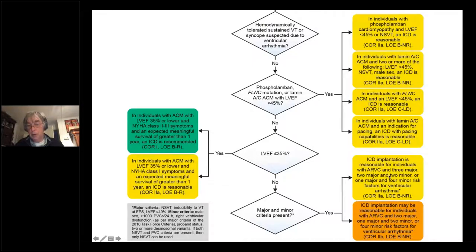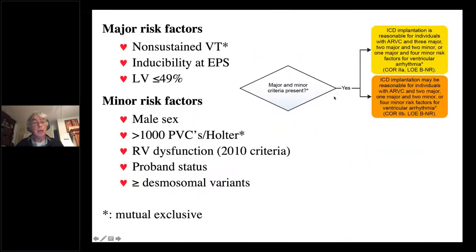So what are these major and minor criteria? The major risk factors are non-sustained VT, inducibility, and left ejection fraction below 50%. And the minor risk factors are male sex, age, the burden, PVC burden on Holter, RV dysfunction, the proband in the disease, and the presence of one or two or more genetic variants, pathogenic variants.